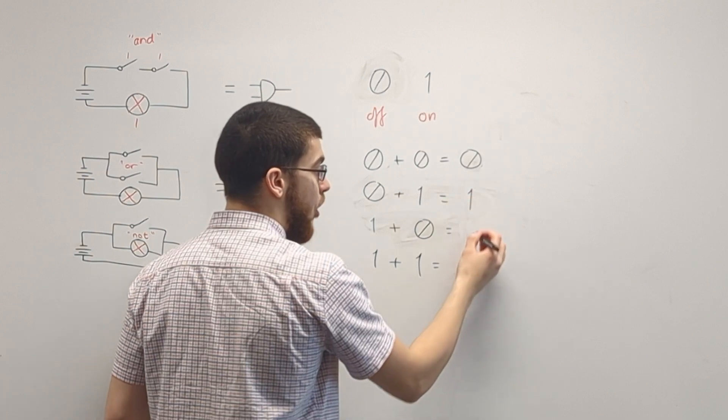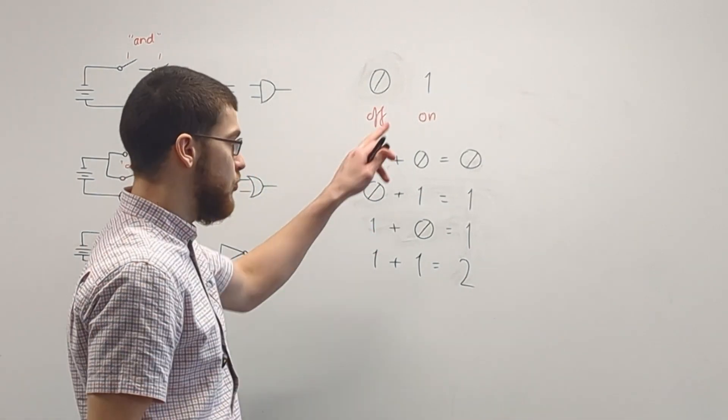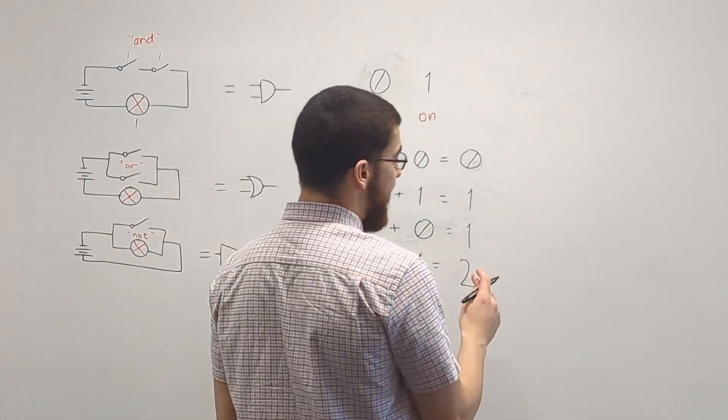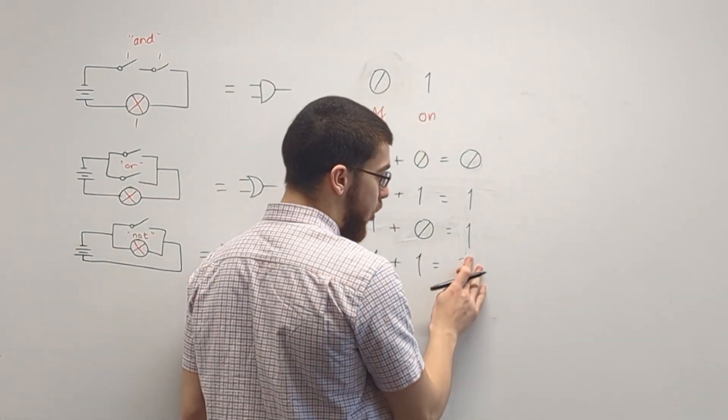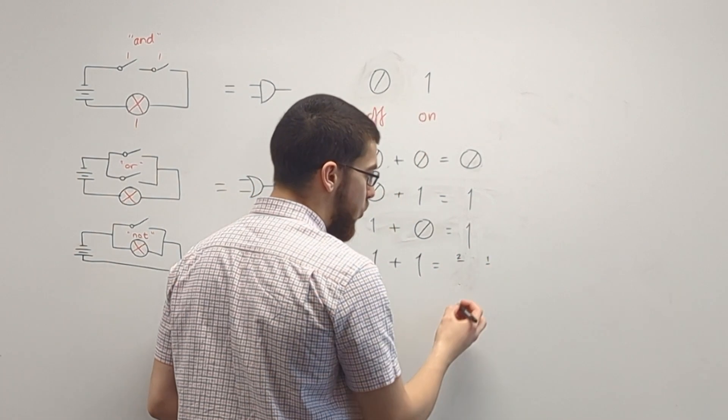So 0 add 0 is 0, 0 add 1 is 1, 1 add 0 is 1, and 1 add 1 is 2. But remember, we've only got two states, 0 and 1. So instead, we need to have a placeholder or a place value to hold the 2 and a place value to hold the 1.